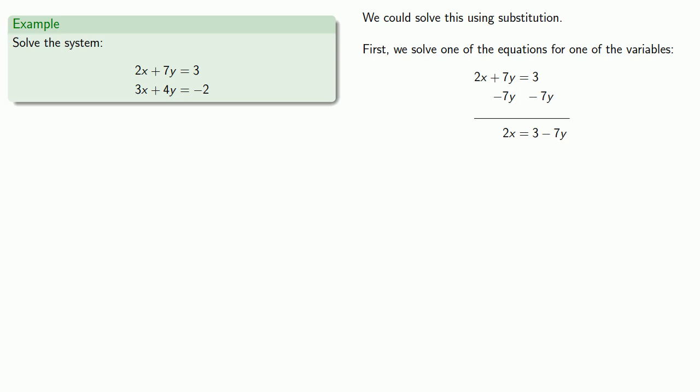To get rid of a product, we divide. On the left side, we have a common factor of 2 which we can remove. On the right side, we have a rational expression. Solving the first equation for x gives us x = (3 - 7y)/2.